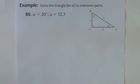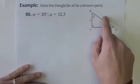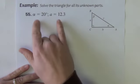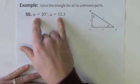Okay a couple other examples. Solve the triangle for all its unknown parts. Okay so there are six parts of this triangle. There are the three sides and there are the three angles. I want all six of them. I'm given two. I'm actually given three. I know what the angle C is.